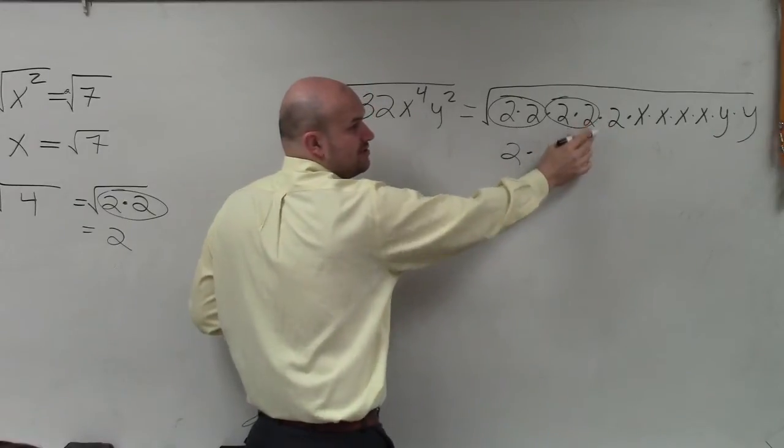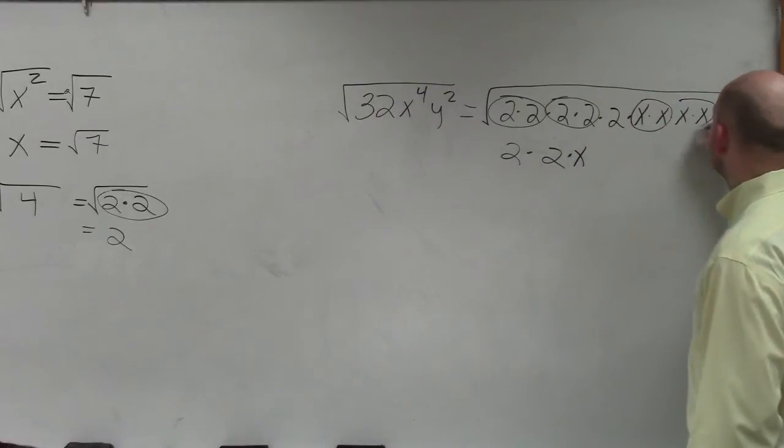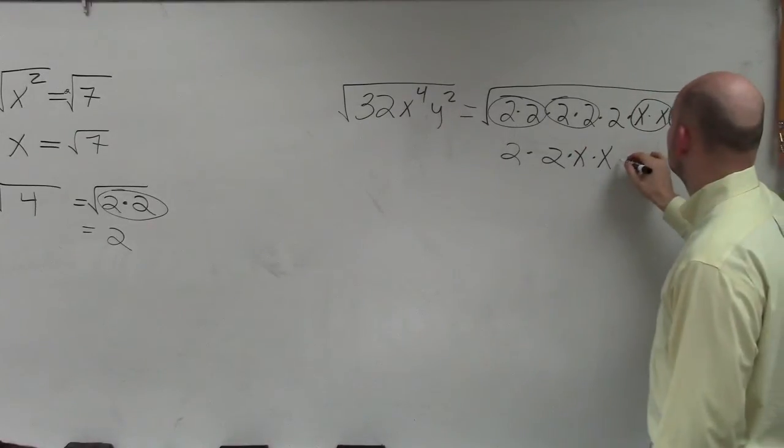We can't take just the square root of 2, so then I move to the x's. Square root of x times x is x. Square root of x times x is x. And the square root of y times y is y.